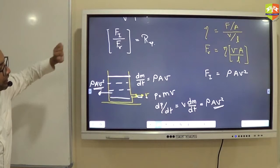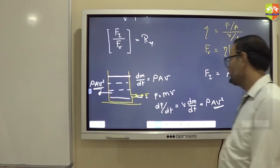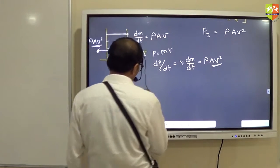So inertial force is basically rho A V squared. That happens because water has some mass in it, it has some density. Alright, so this is inertial force—rho A into V squared.